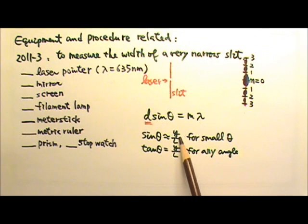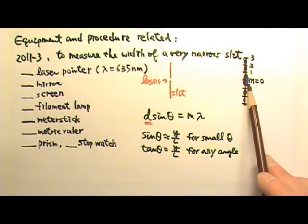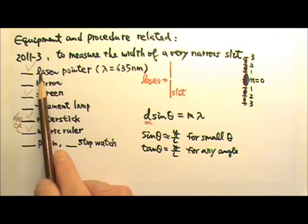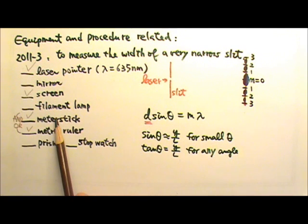This means we need something to measure the Y, the distance between the patterns on the screen, and the L, the distance to the screen. So we need the laser, a screen, a meter stick, and or a metric ruler.